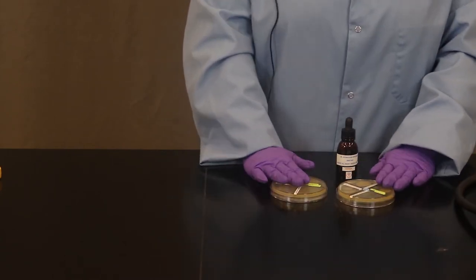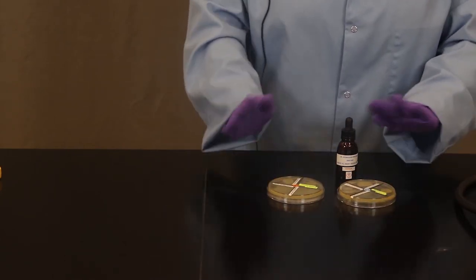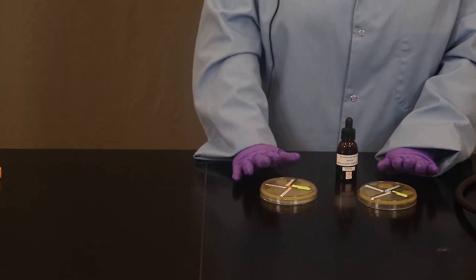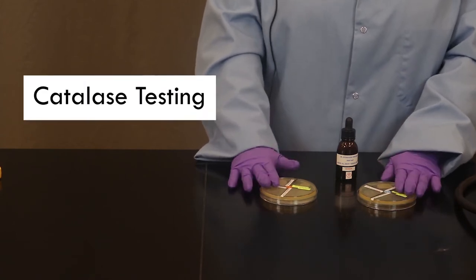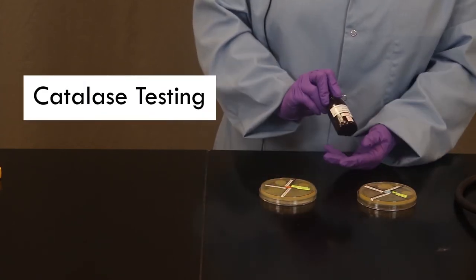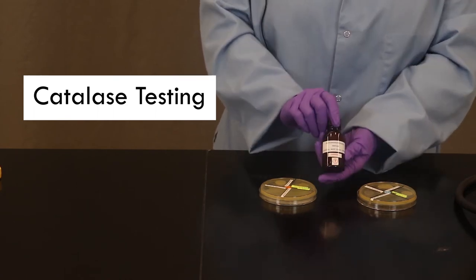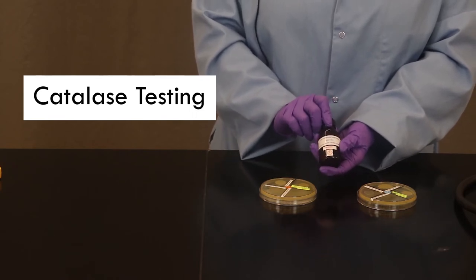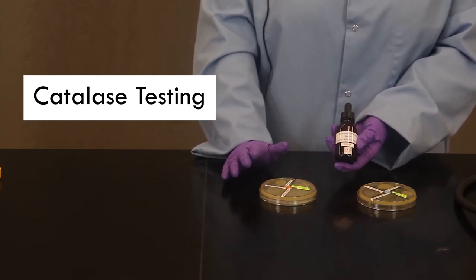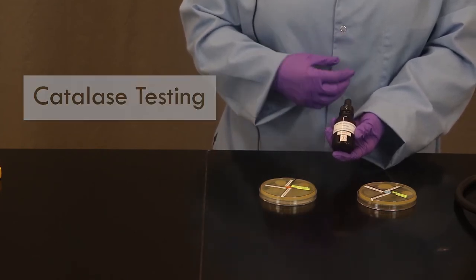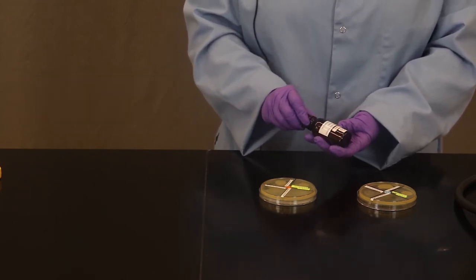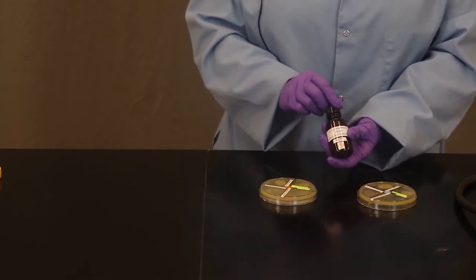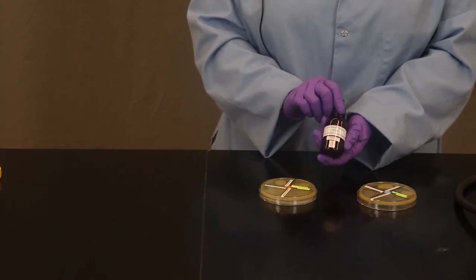So you're going to record your observations of which organisms grew where. But in addition to this another way we can test oxygen requirements is through what we call catalase testing. The catalase test requires the addition of hydrogen peroxide. If a bacterial organism produces the catalase enzyme, it's going to have a chemical reaction that creates oxygen. And we're going to see that form as bubbles. This is one of the multiple protective enzymes that aerobic organisms or the variety of aerobic organisms can use to survive in the presence of oxygen.